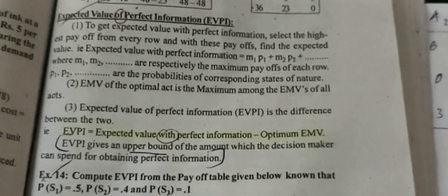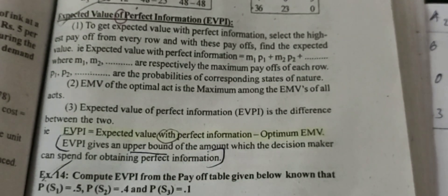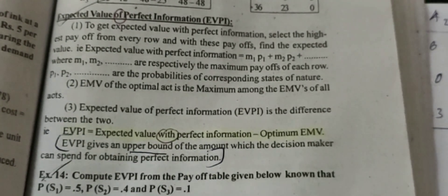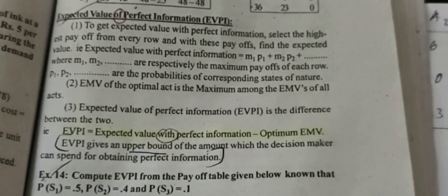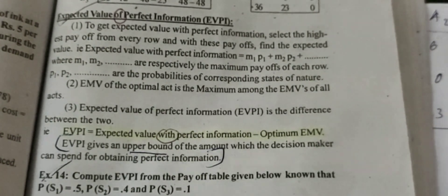What is the expected value of perfect information? To get a value with perfect information, you should select the highest payoff from every row, and with these payoffs find the expected value. That is, expected value with perfect information equals the sum of the maximum payoff of each row multiplied by the corresponding probabilities of the state of nature. From here, the next step is the EMV of the optimal act, which is the maximum among the EMVs of all acts.